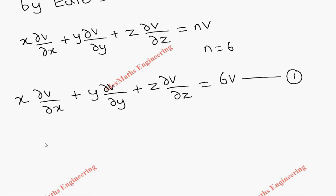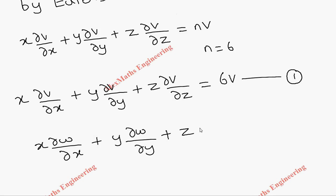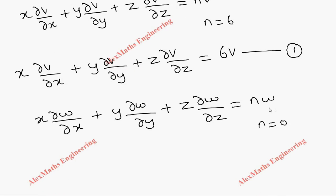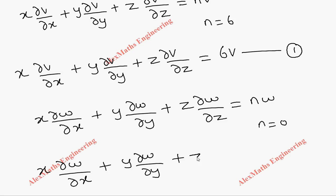In the same way, we apply Euler's theorem for function w: x·∂w/∂x + y·∂w/∂y + z·∂w/∂z = n·w. Here the value of n is 0, since the degree of w is 0. Substituting n = 0, we get x·∂w/∂x + y·∂w/∂y + z·∂w/∂z = 0. Let's call this the second expression.